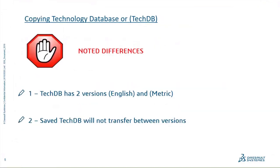Once you get into the Tech DB — the technology database, the knowledge base, we refer to it in a lot of different ways — first thing to know is there's only one Tech DB in your SolidWorks, but inside it there are two versions: English and metric. When you're working in either one, make sure you know which one you're updating, building machines in the right location. Also note that the Tech DB will not transfer between versions — you can't just move the 2019 Tech DB to a 2020 folder; you'll have to import it.